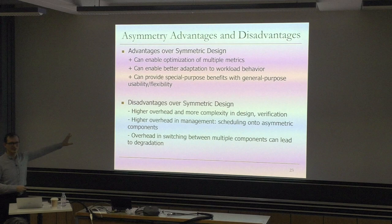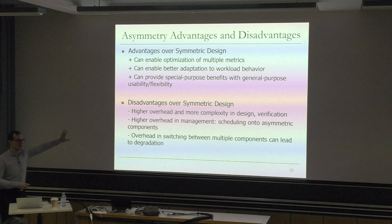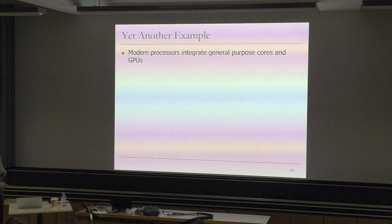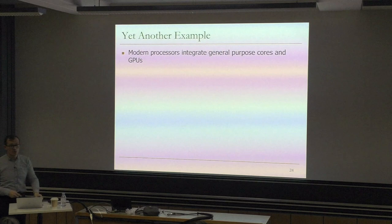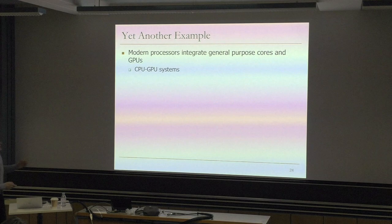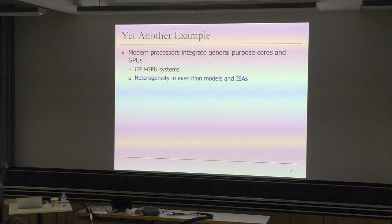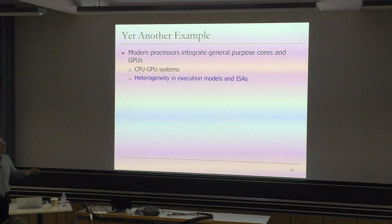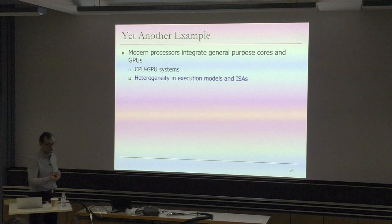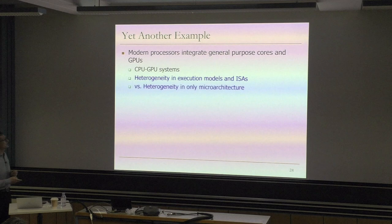Modern processors are clearly asymmetric - they integrate general purpose cores and GPUs, and within the general purpose cores there's a lot of asymmetry also. CPU-GPU systems are a special example because these have very different execution models: CPUs are single instruction single data (von Neumann architecture), whereas GPUs are SIMD - single instruction, multiple data. Clearly there's heterogeneity in ISAs also. But this is not the only way of achieving heterogeneity - there are many, many ways. You can also have heterogeneity just in microarchitecture, having different sorts of cores with the same ISA but different implementations.